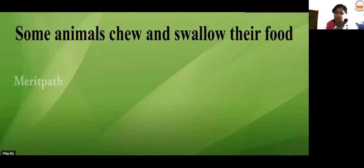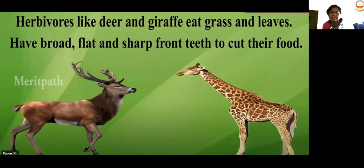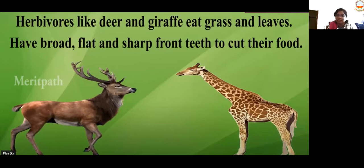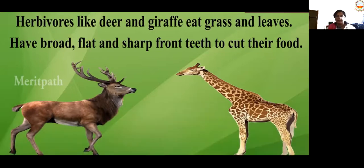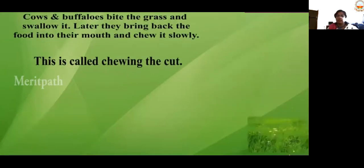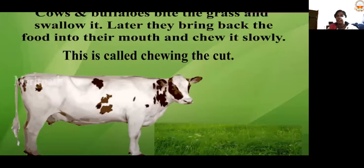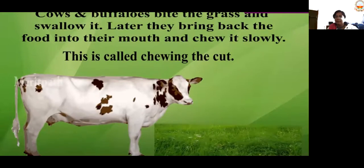Some animals chew and swallow their food. Herbivores like deer and giraffe eat grass and leaves. They have broad, flat, and sharp front teeth to cut their food. With the front teeth they cut the leaves from the plant, and with the broad teeth they start chewing it. One example is cow — you might have seen a cow always moving its mouth. It keeps chewing until the food is broken into small pieces.